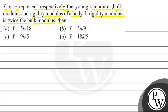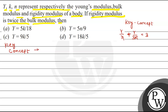We have to choose the correct option. The key concept is the relation between Y, eta, and K. The relation is: Y/eta + Y/3K equals 3. This relation will be used in the solution.